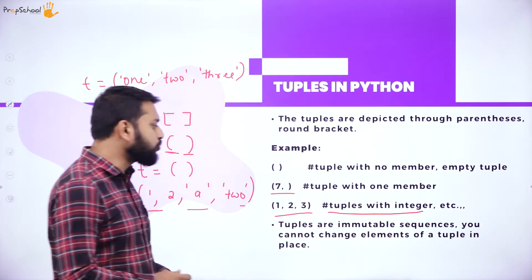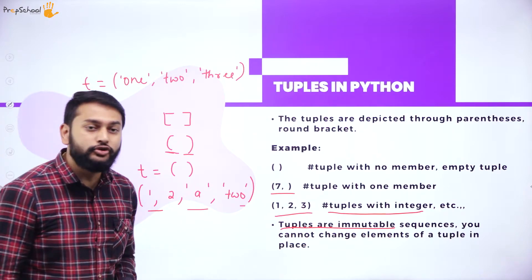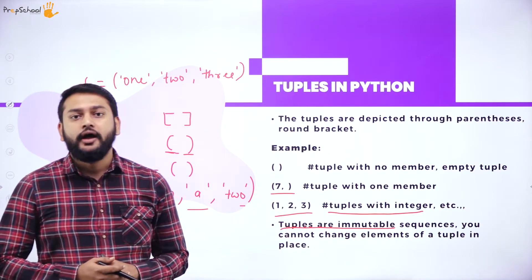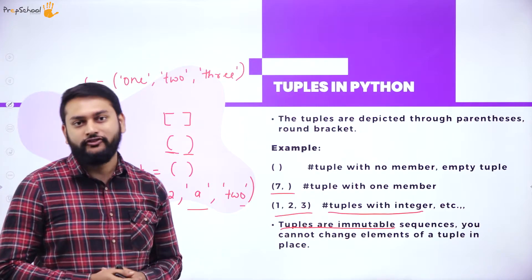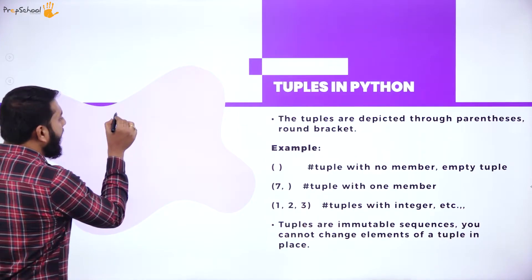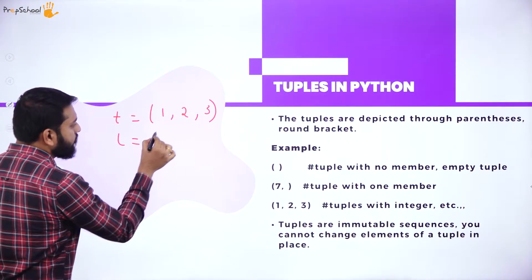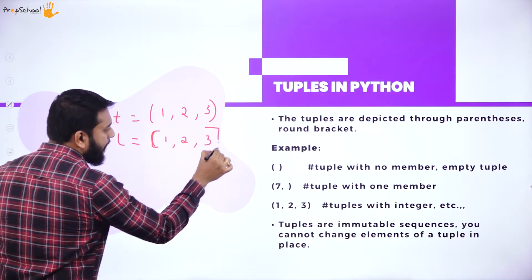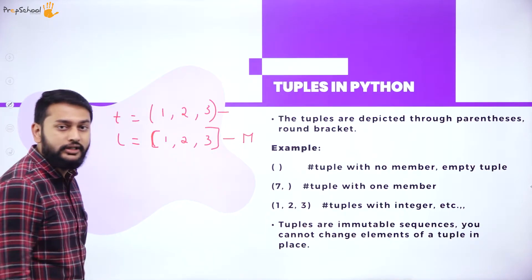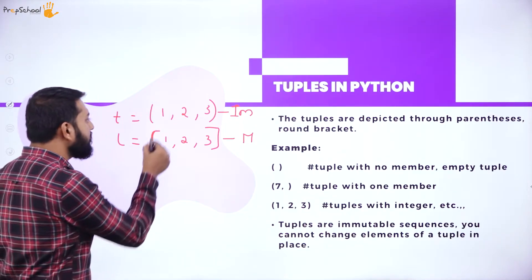Moving on — before that I have an important point: tuples are immutable. Tuples are an immutable sequence; you cannot change the elements of a tuple. In the concept of lists, if I have a list with square brackets one, two, three, the list is mutable. But when it comes to a tuple, it is immutable.